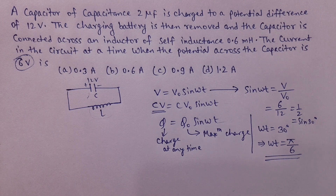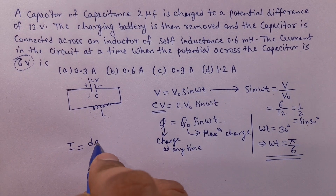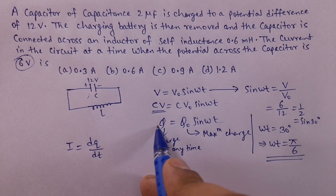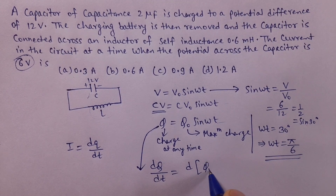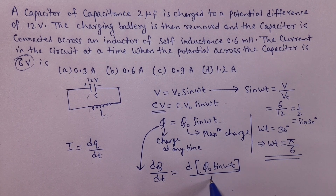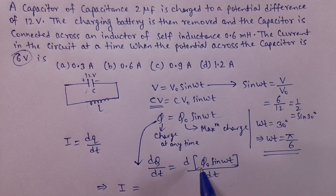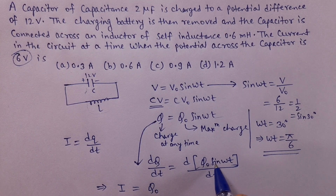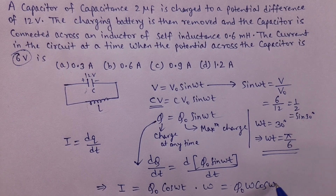अब हम लोगों ने omega t का value निकाल लिया है. अब हम लोगों को current निकालना है. Current क्या होता है? i = dq/dt — rate of flow of charge. So इस equation को time के respect में differentiate करेंगे both sides. dq/dt = d(Q₀ sin(ωt))/dt. Left side क्या हो जाएगा? i at any time. Right side: Q₀ को बाहर लेते हैं, sin(ωt) differentiate करने पर cos(ωt) आएगा, फिर inside ωt differentiate पर ω आएगा. So i = Q₀ω cos(ωt).